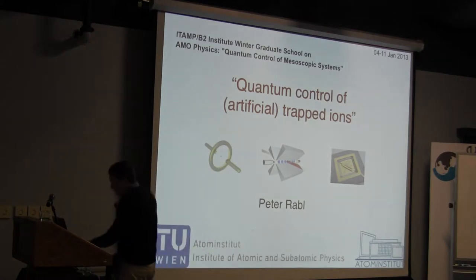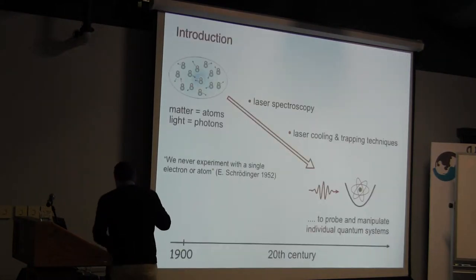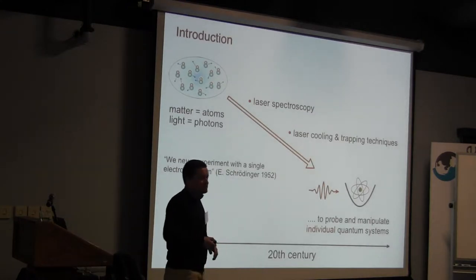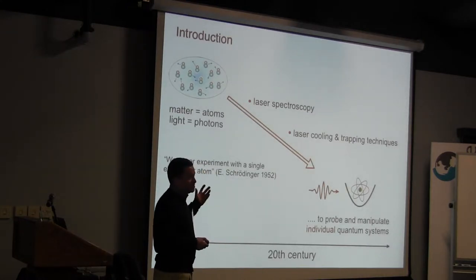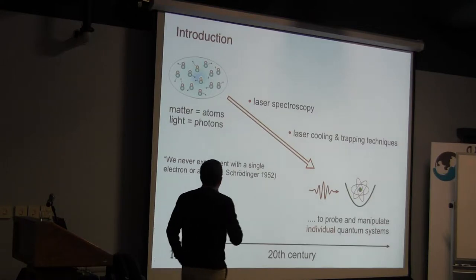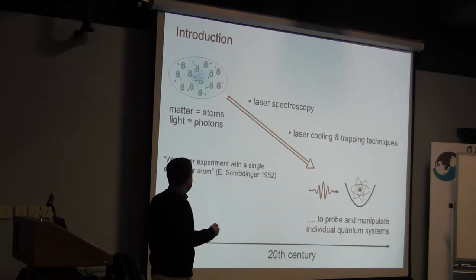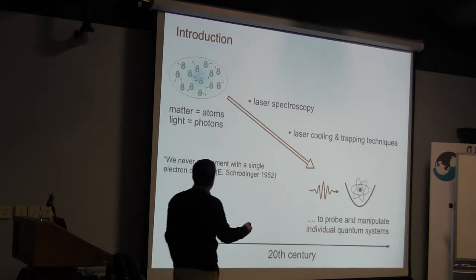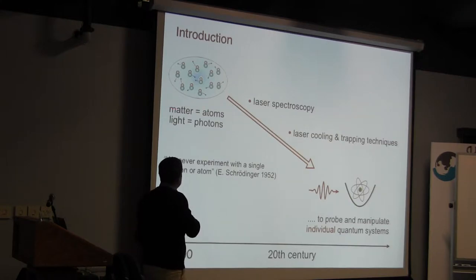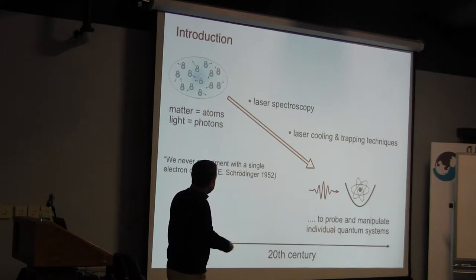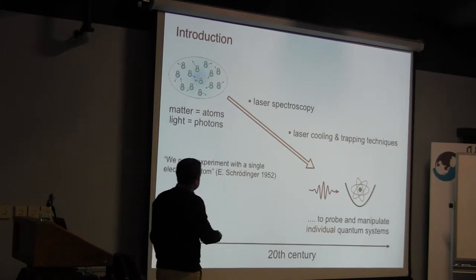I would like to start this introduction with a quite general slide summarizing some of the main achievements from the point of atomic physics over the last century, where we not only gained a new understanding of how you can use quantum mechanics to describe matter and photons, but also developed a series of very powerful techniques to control these quantum systems.